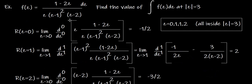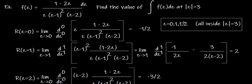For the last problem, f(z) = (1−2z) / [z · (z−1)² · (z−2)]. We need the integral along a closed curve — a circle of radius 3 centered at the origin. The poles are at z=0 and z=2 (simple poles) and z=1 (pole of order 2). All these poles lie inside the circle, so we consider all of them.